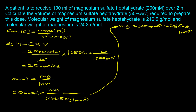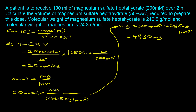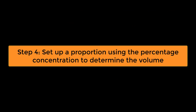Solving for the quantity in milligrams: 20 millimoles times 246.5 milligrams per millimole gives 4930 milligrams, as the millimoles cancel out. Step three is to convert 4930 milligrams to grams, because we'll be using the 50% w/v percentage concentration to set up a proportion. Using the conversion factor that 1000 milligrams equals one gram, we get 4.93 grams.